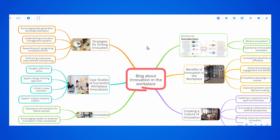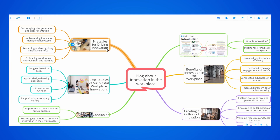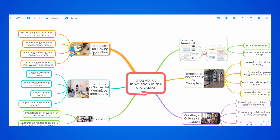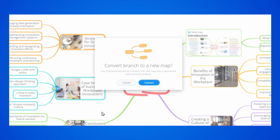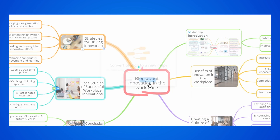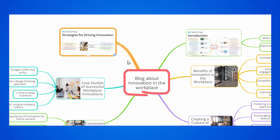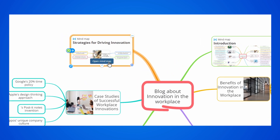Now let's see how you can convert branches to MyMaps. Select the branch you want to convert, then right-click on it and select Convert to MyMap. This will transform that branch and its child branches into an entirely separate map, which you can access and edit.